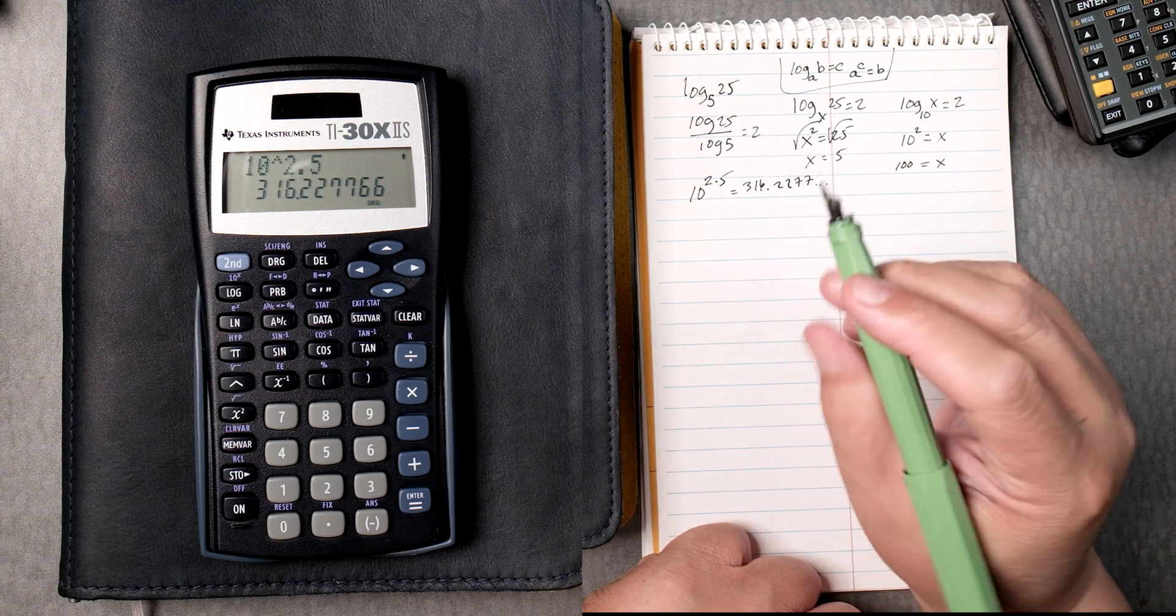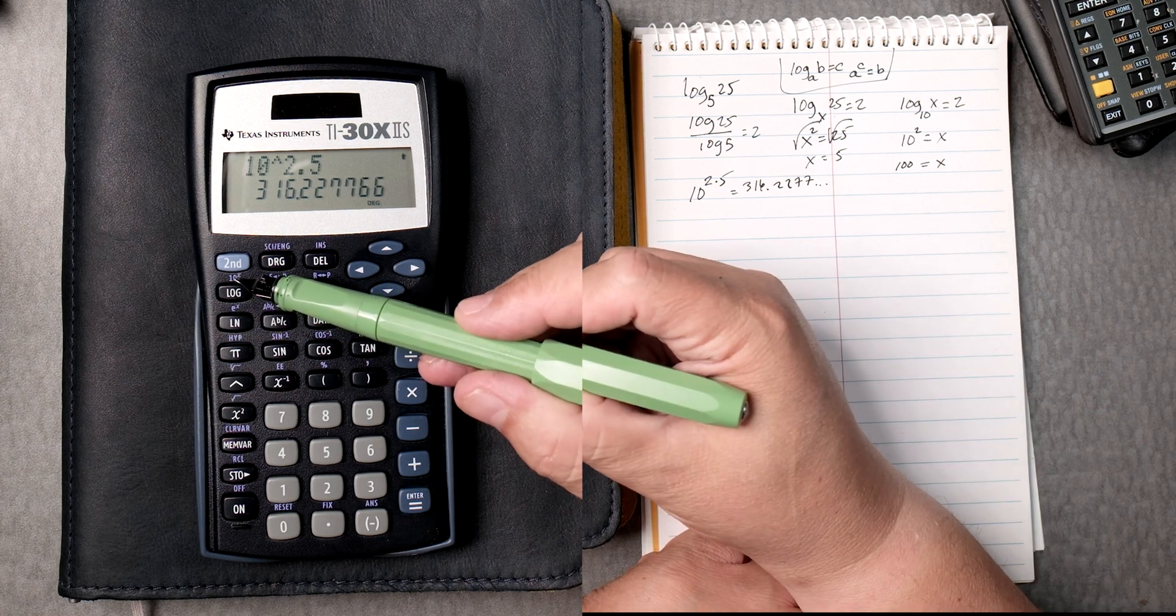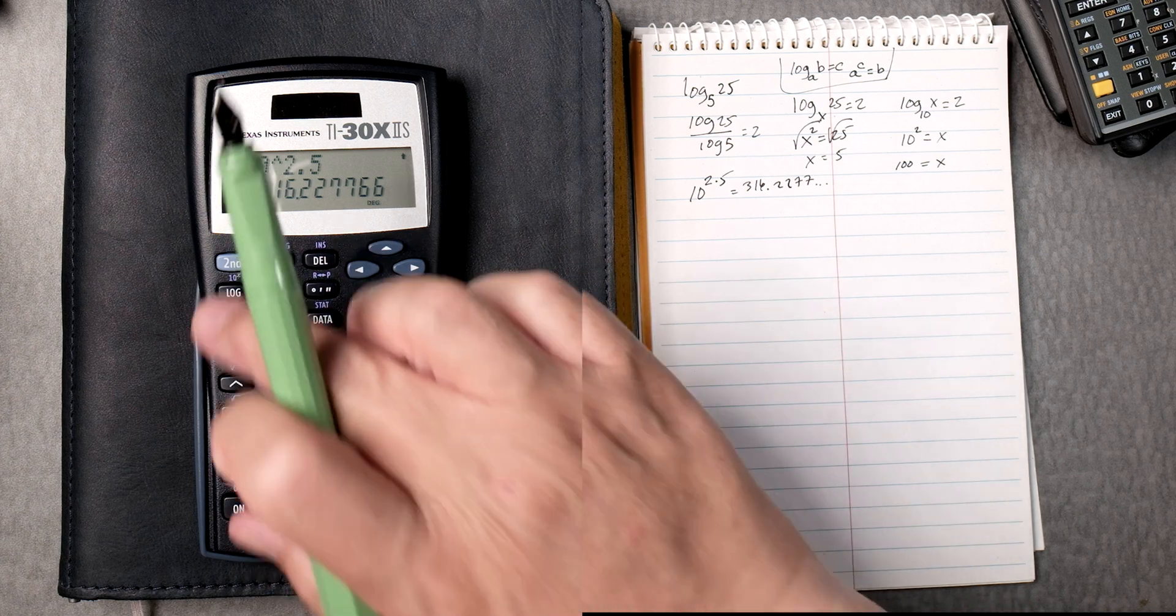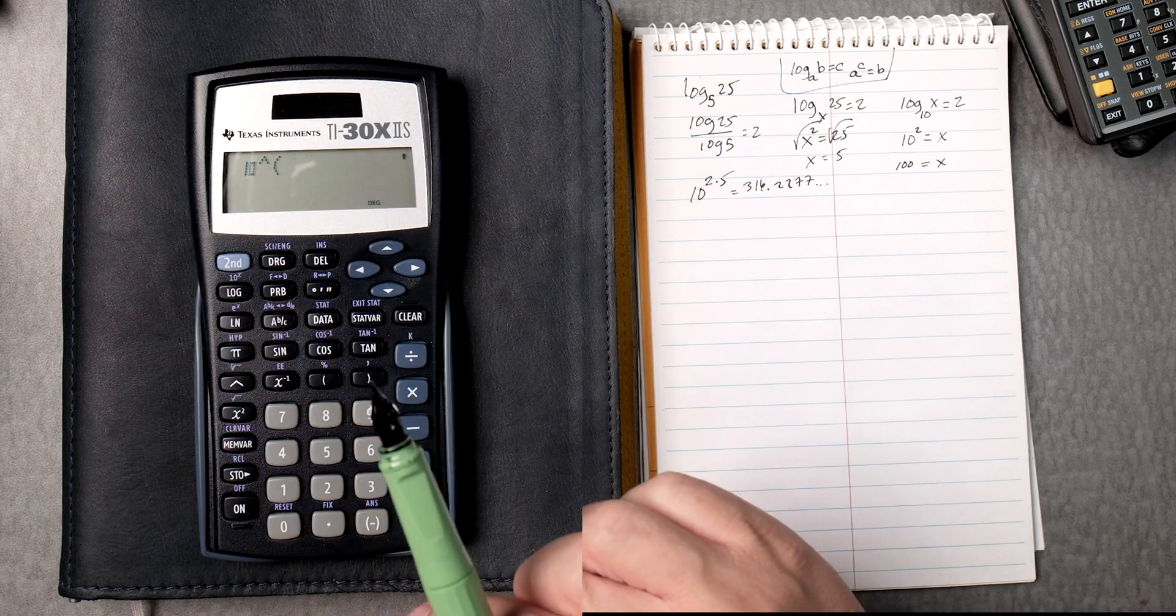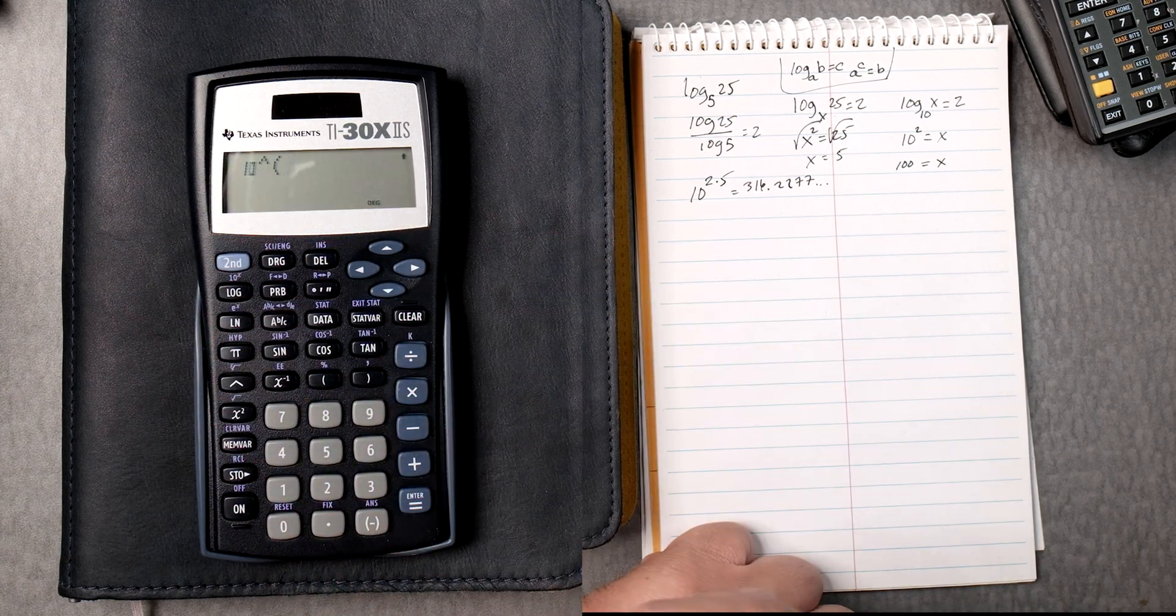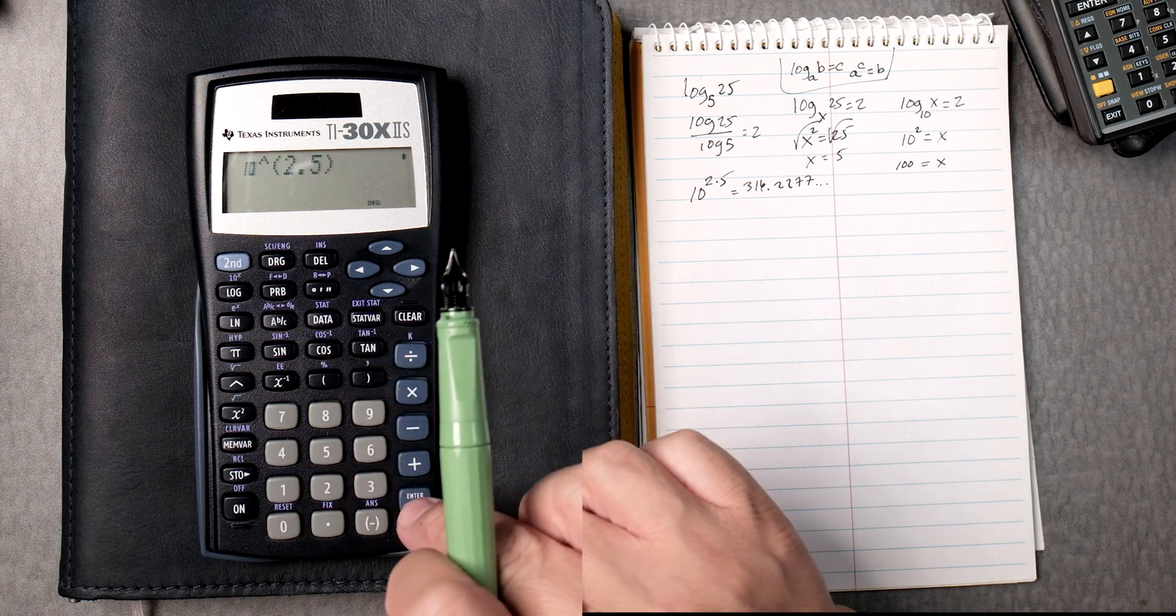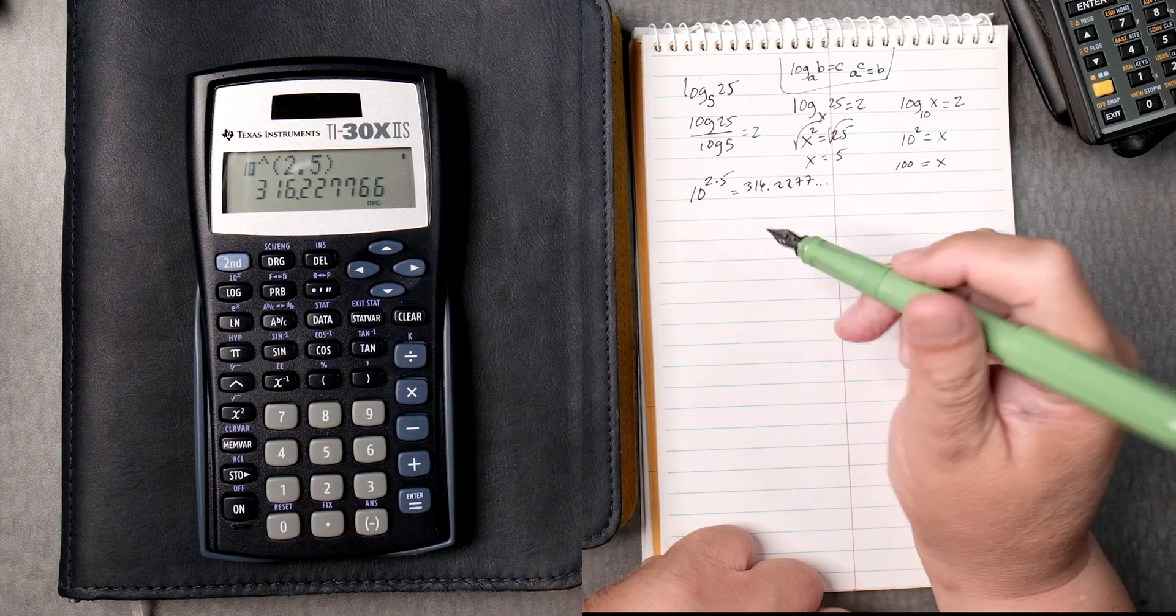You can also do it another way. If you look at the log key, it's 10 to the x, so press second, log, and it gives you 10 already with a carat. 2.5, less steps. You can close it if you like. It gives you the same answer.